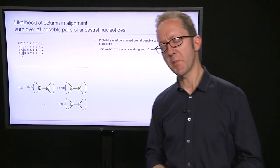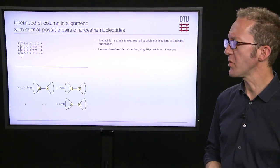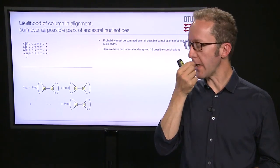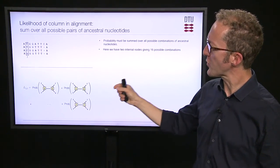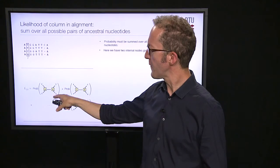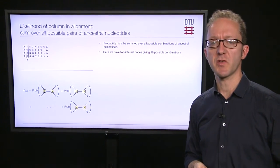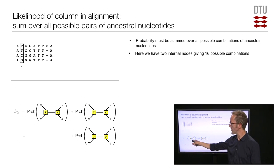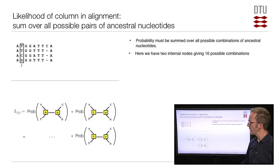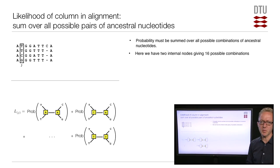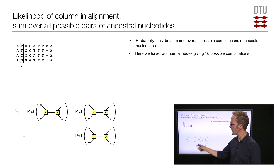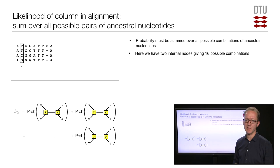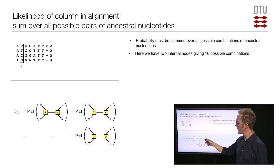As we discussed in the previous lecture on maximum likelihood, in order to compute the likelihood of a single column in an alignment of sequences, you have to compute the likelihood for all the possible combinations of ancestral nucleotides in the tree. You don't know what the ancestral nucleotides were. In the simple case where we have four sequences, we will have two ancestral nucleotides, and there will therefore be 16 possible combinations of ancestral nucleotides at the two internal nodes.